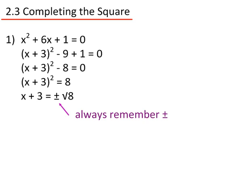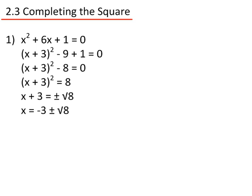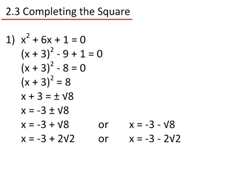Always remember the plus or minus, because square roots have a positive and a negative answer. Taking 3 from both sides: x equals minus 3 plus or minus the square root of 8. This gives two answers: x equals minus 3 plus the square root of 8, or x equals minus 3 minus the square root of 8. Simplifying, x equals minus 3 plus 2 root 2, or x equals minus 3 minus 2 root 2.